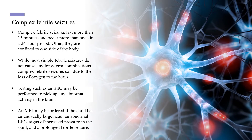Complex febrile seizures last more than 15 minutes and occur more than once in a 24-hour period. Often, they are confined to one side of the body. While most simple febrile seizures do not cause any long-term complications, complex febrile seizures can, due to the loss of oxygen to the brain.